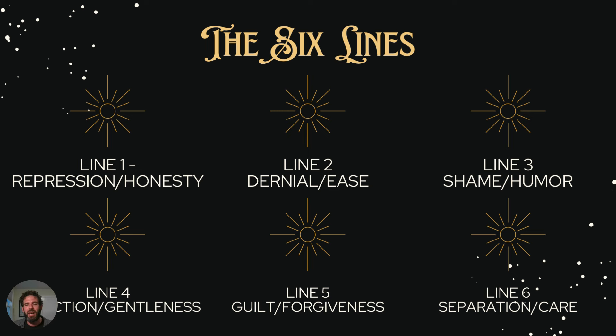And finally, line six is about separation and care. It's about the fact that we see one another as different, and because we're different, I don't need to pay attention to you. This six line is how we allow genocide. The simple solution here is to care — to show others that you are genuinely concerned about them and their welfare.